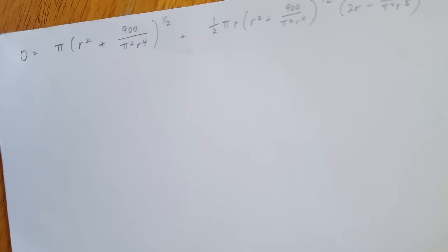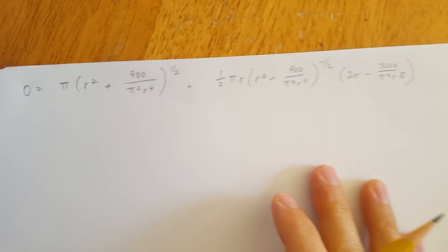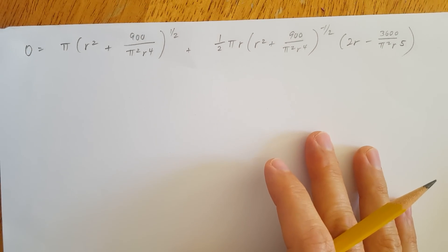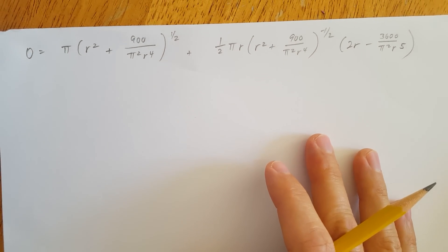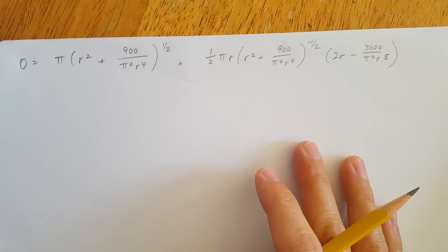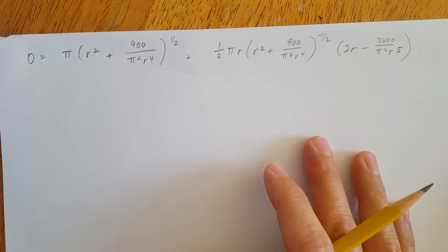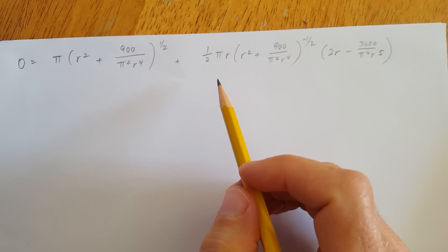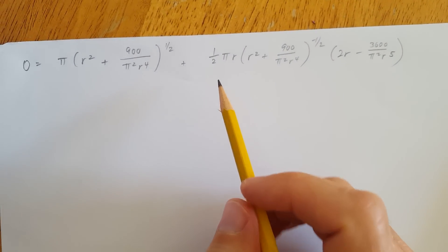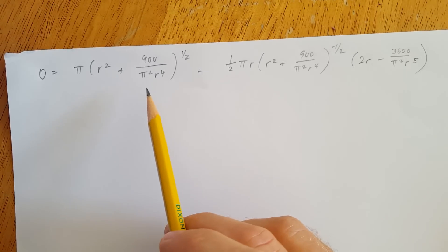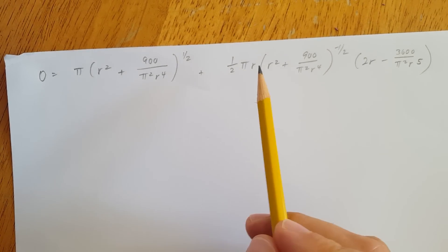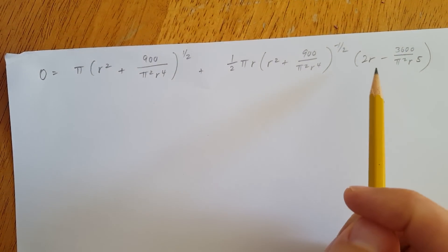So this is the problem that we have. When I first saw this I thought, wow, this is ugly — and in fact it is pretty ugly and it's not easy, but just take it step by step and it turns out to be not terrible. The first thing we want to do is we know we have to combine these two terms eventually, but we're going to take that step by step.